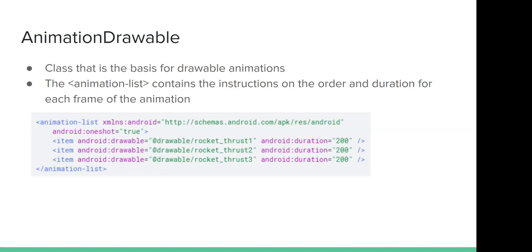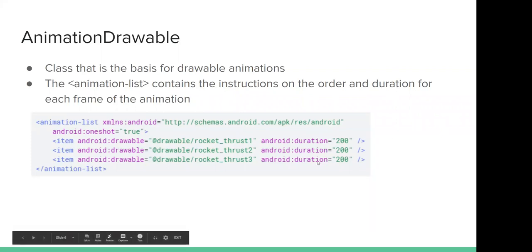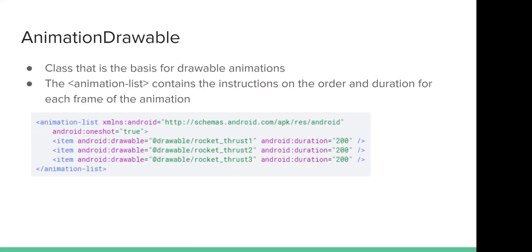One way to use AnimationDrawable is to load a series of drawable resources one after another to create the animation, just as you'd traditionally do it. AnimationDrawable is the class that forms the basis for drawable animations, and you use it to define frames of an animation — where a frame is one picture. The simplest way is to create an XML file listing the frames, which should be placed in the resources/drawable directory inside your Android project.